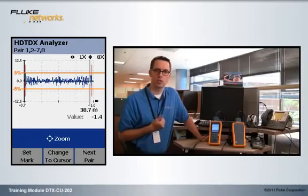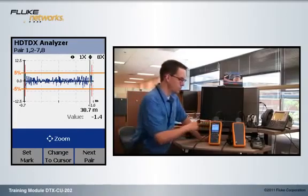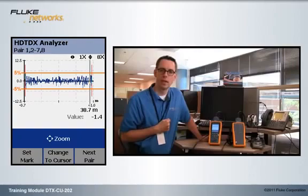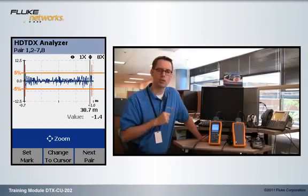And so, let's review the procedure. Find out which is the worst performing pair. Go to the HDTDX. Look at that worst performing pair. Change the zoom to 8X in the top right-hand corner. And look and see how many events exceed roughly about halfway up the scale and halfway below the scale.